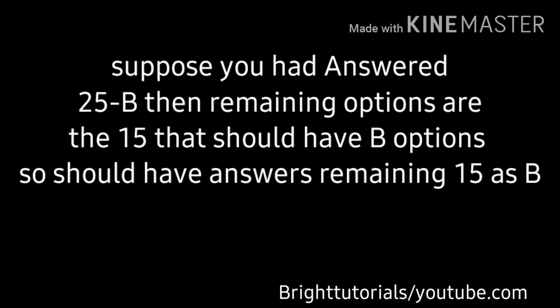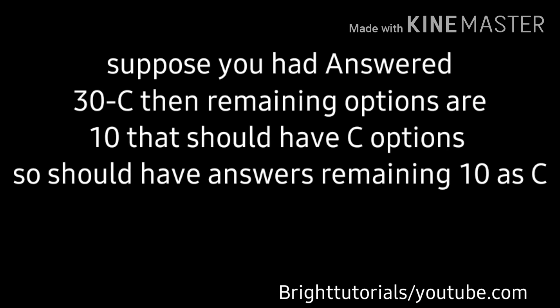Suppose you have answered 25 questions as option B. The remaining 15 questions that should have option B — you should answer those remaining 15 as B. Now for option C: suppose you have answered 30 questions as option C, then the remaining 10 questions that should have option C need to be answered as C.